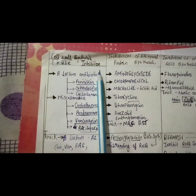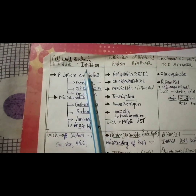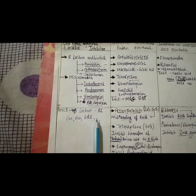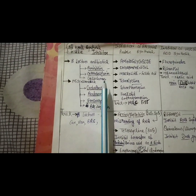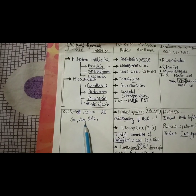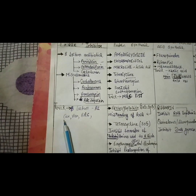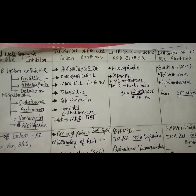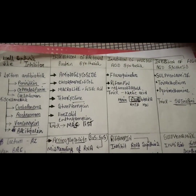First we have to talk about cell wall synthesis inhibitors. To learn this I have made a very easy trick: beta-lactam. Under beta-lactam, today carbapenems and vancomycin will come, along with penicillin, cephalosporin, and cycloserine. Now we will talk about inhibition of bacterial protein synthesis.